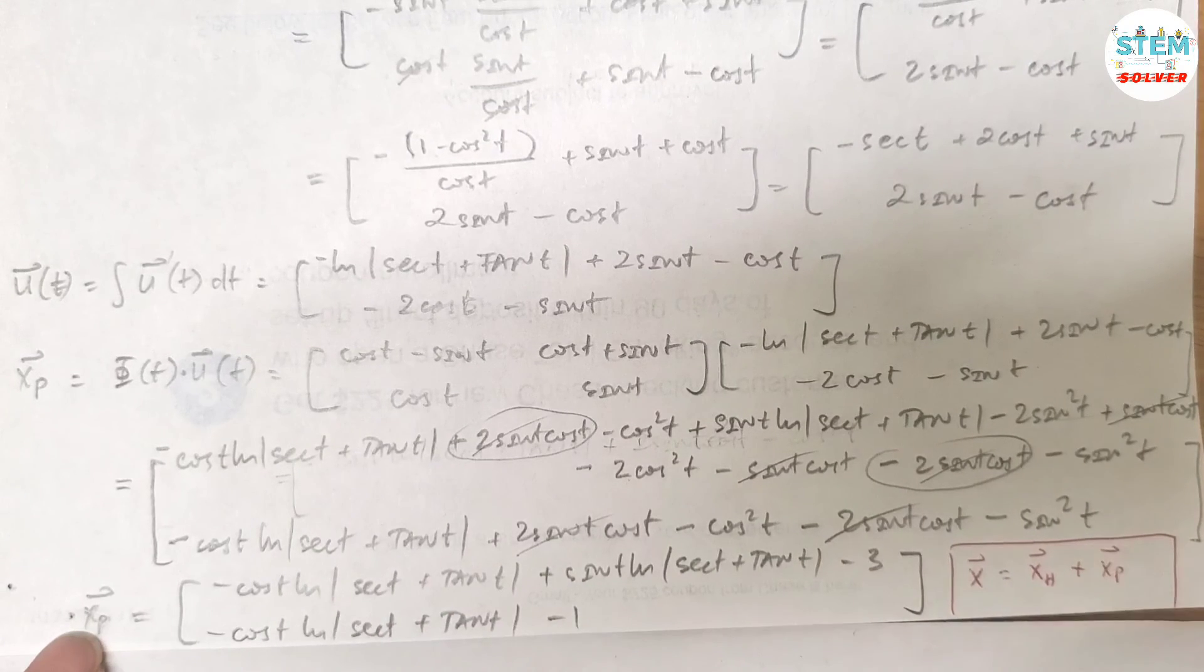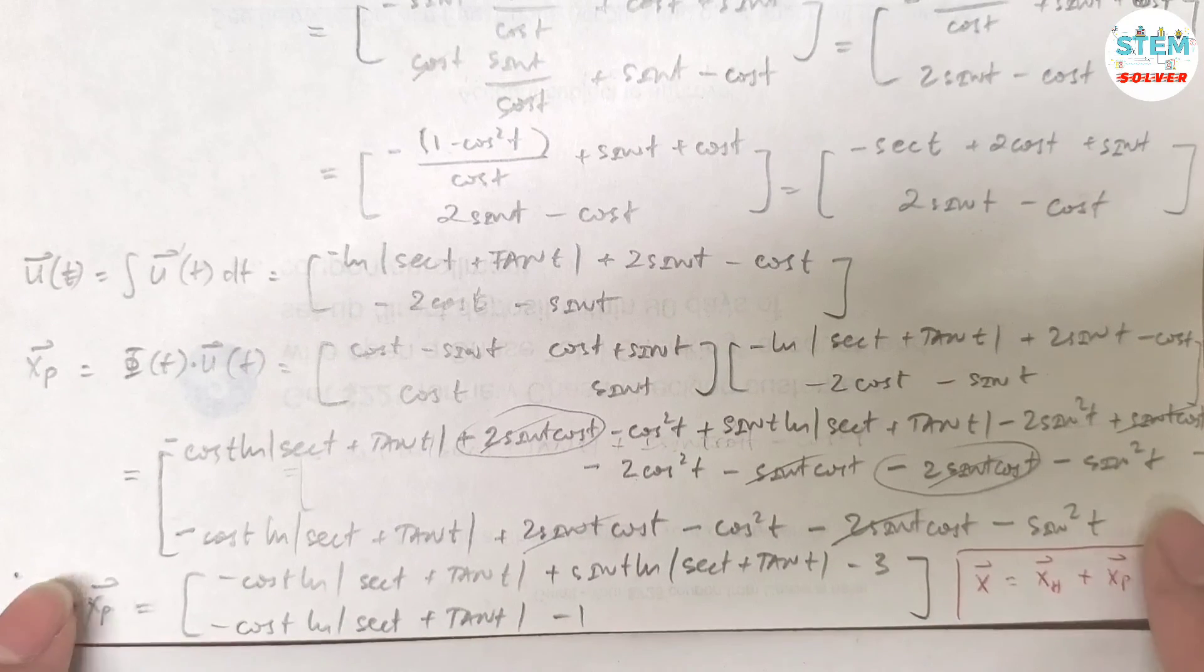So here's my non-homogeneous part, and the homogeneous part is what I already circled above. So look back at your notes, okay? Hope that makes sense. That's it.